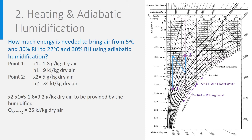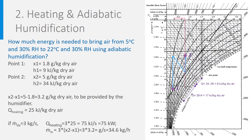With 3 kilogram per second flowing, this leads to a heating capacity of 75 kW and a mass flow rate of 34.6 kilogram per hour. An alternative approach is to heat the air first much more — up to the intersection of the wet bulb line from point 2 and the absolute humidity of x1, corresponding to about 29.5 degrees Celsius — and then humidify down to point 2. The advantage is that only one heater is needed, and the total energy used is unchanged.